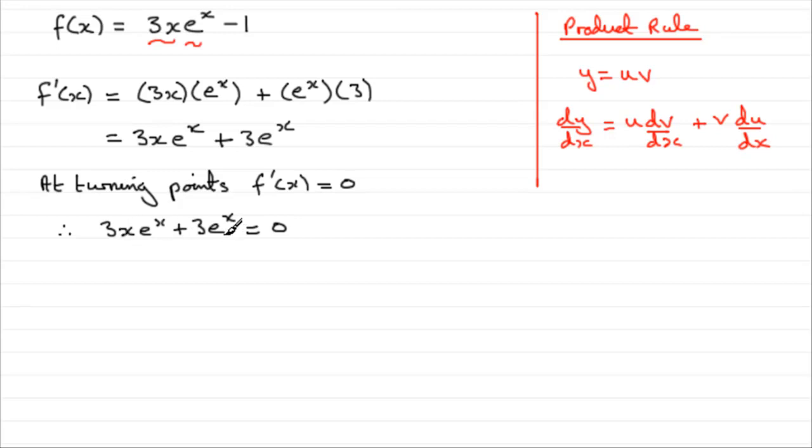To solve something like this, I would factorize it first. We've got a common factor running through these two terms, the 3 and the e to the power x. So I'd bring 3 e to the power x out the front of a bracket, and this would equal 0.